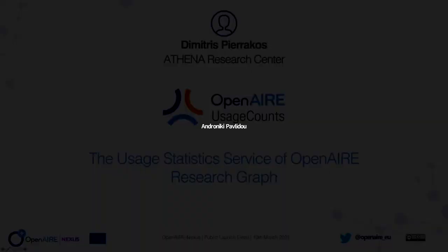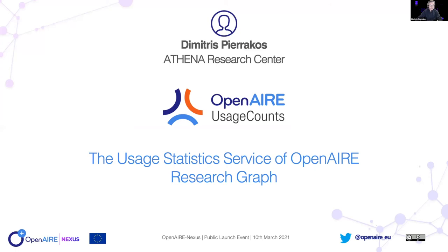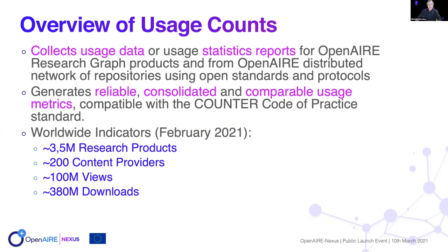I'm Dimitris Pierrakos from Athena Research Center. The Usage Counts service is the use statistics service of the OpenAIRE Research Graph. What the service does is collect usage statistics reports for OpenAIRE Research Graph products and for the OpenAIRE distributed network of repositories, using open standards and protocols. In other words, it simply counts and collects the number of times an item from the OpenAIRE Research Graph is viewed or downloaded. The sources of this information are institutional repositories, data repositories, national aggregators, etc. The outcome is the generation of reliable, consolidated, and comparable usage metrics compatible with the COUNTER code of practice standard.